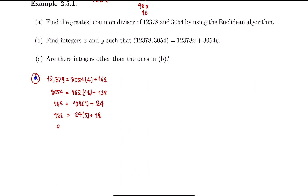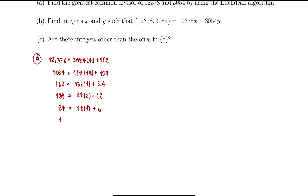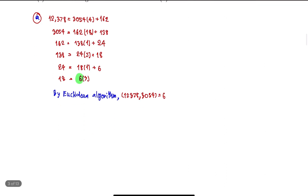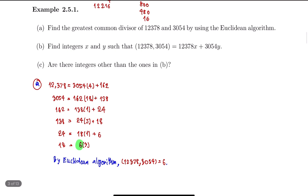We need to add 18, so we have 24 equals 18 times 1 plus 6. Then 18 equals 6 times 3, and the remainder is now 0. By the Euclidean algorithm, the greatest common divisor is the last nonzero remainder. So the greatest common divisor of 12,378 and 3,054 is 6.